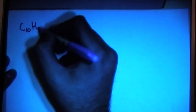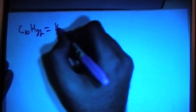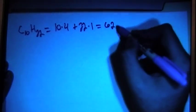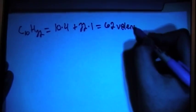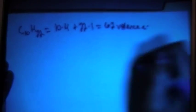We have C10H22, which is the chemical formula for decane, and that's going to give us 10 carbons, each with 4 valence electrons, plus 22 hydrogens, each with 1 valence electron, and that's going to sum up to 62 valence electrons.